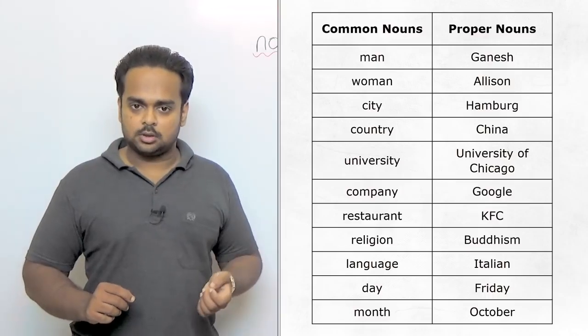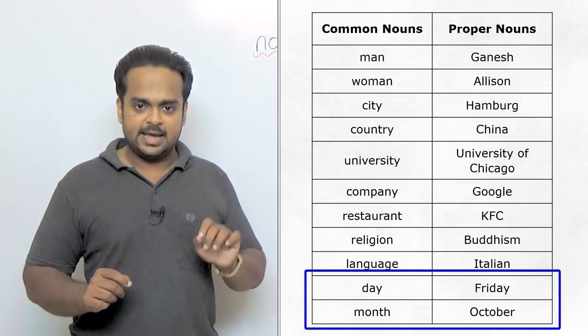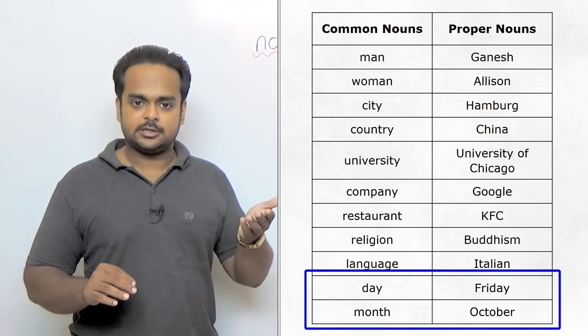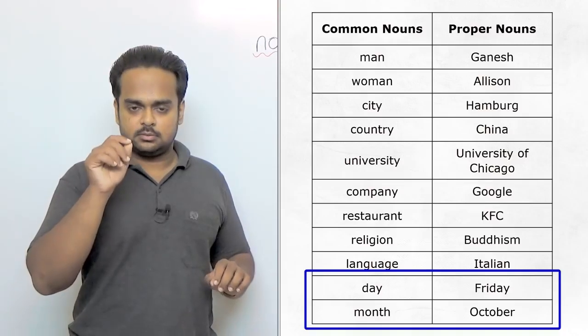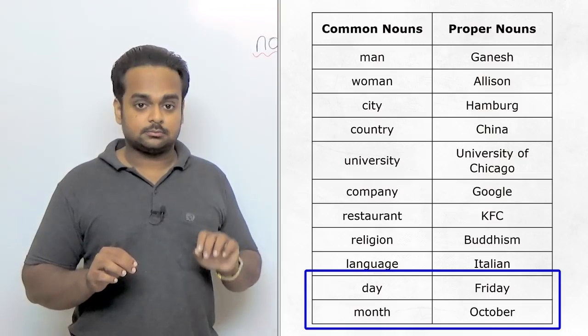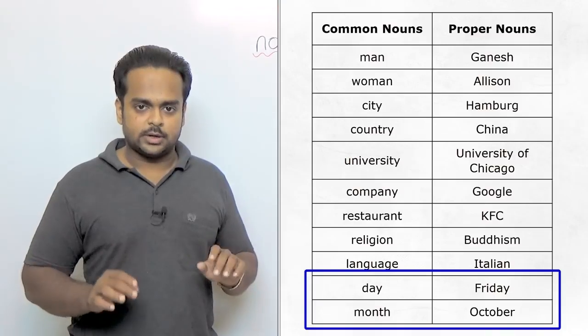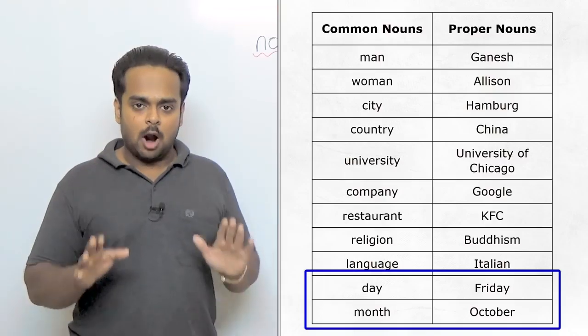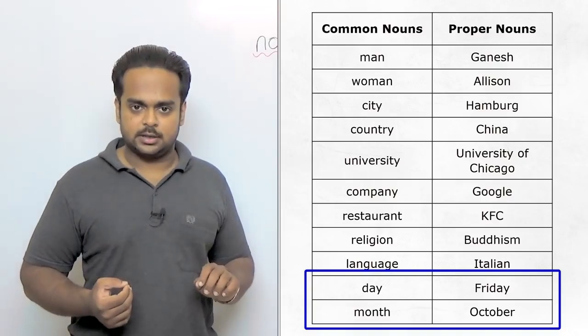There are more examples on the screen but I want you to focus on the last two, day and month. With the days of the week, Sunday, Monday, Tuesday, Wednesday, Thursday, Friday, Saturday, we always write them with the first letter capitalized because they are proper nouns and it's the same thing for months as well. From January to December, all months are written with a capital first letter. So please don't forget this rule, proper nouns are always written with the first letter capitalized.